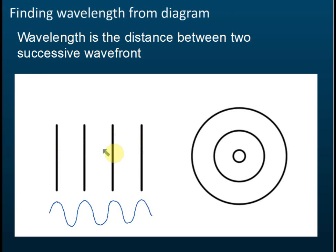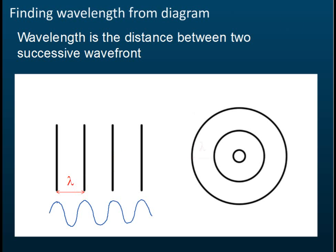If you see straight lines like this, you should know the line is representing the crest. For circular wavefronts it's almost the same. The wavelength is the distance between two successive crests, or two successive wavefronts. This is one wavefront, this is another wavefront, and the wavelength is the distance between them. That is how to find wavelength from a wavefront diagram.